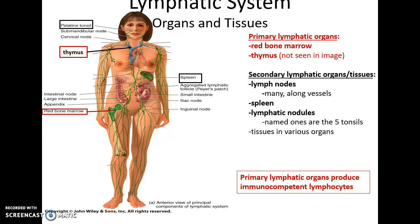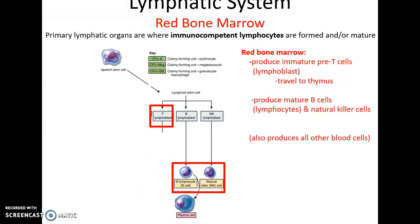There are various organs and tissues that are part of the lymphatic system beyond the vessels. There are two primary lymphatic organs: the red bone marrow, which produces lymphocytes, and the thymus, where T lymphocytes mature. Primary lymphatic organs produce immunocompetent lymphocytes. Then we have secondary lymphatic organs and tissues, such as the lymph nodes that lie along the lymph vessels, and lymphatic nodules which include the tonsils and other lymphatic tissues.